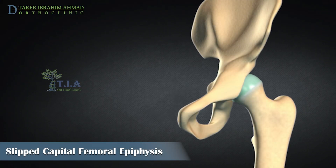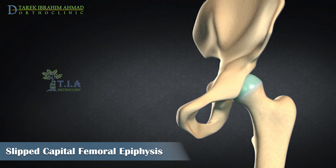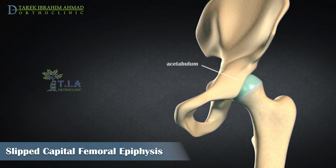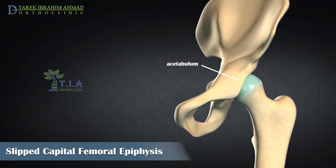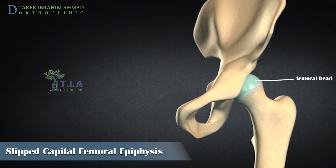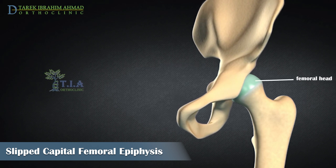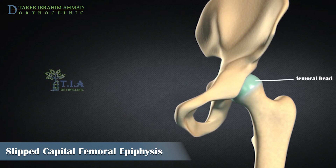The hip is a ball and socket joint. The socket is formed by the acetabulum, which is part of the large pelvis bone. The ball is the femoral head, which is the upper end of the femur.